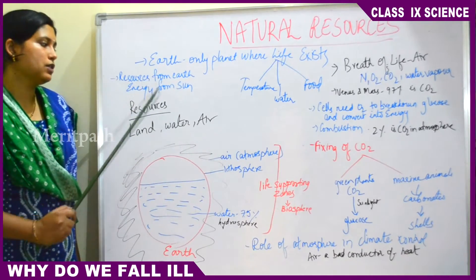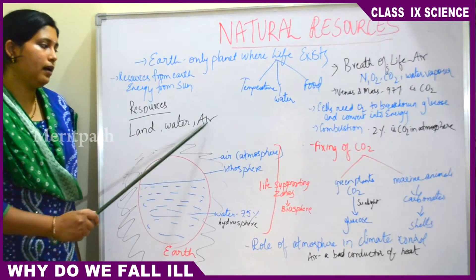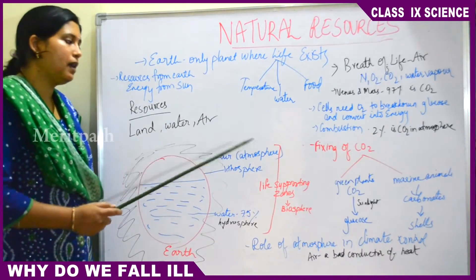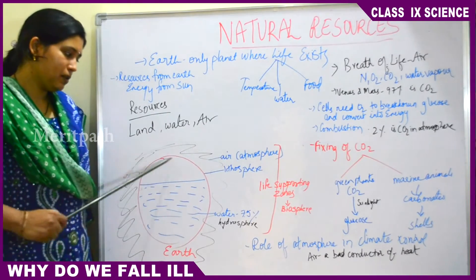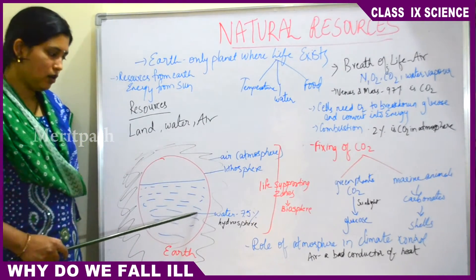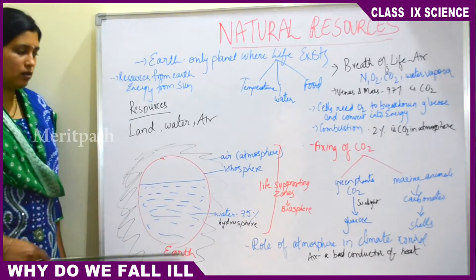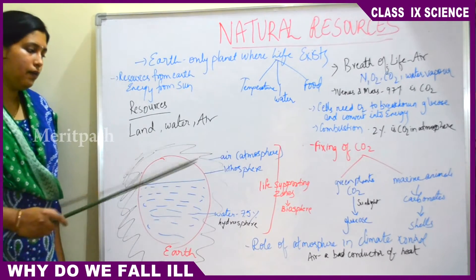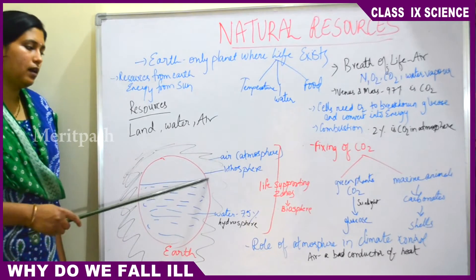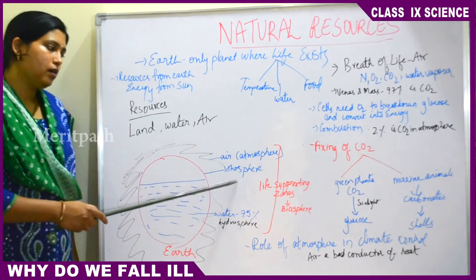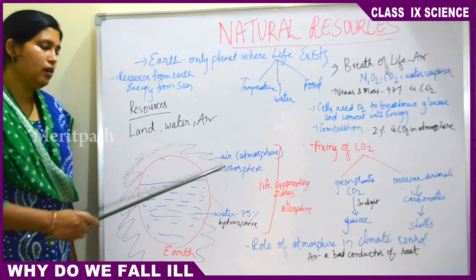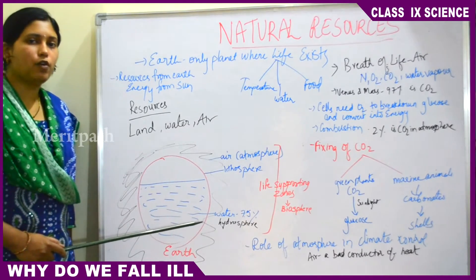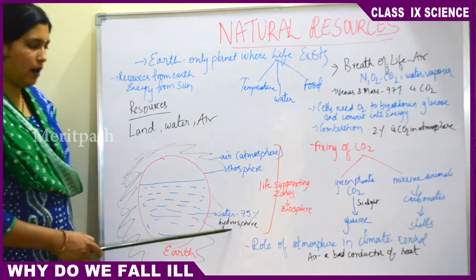The resources from the Earth are land, water, and air, and there should be a proper balance between these three. The Earth is surrounded by air, which is called the atmosphere. The outer crust of the Earth is called the lithosphere. Earth is constituted of 75% water, and this water zone is called the hydrosphere. Water is present both on the ground and underground, and can be in the form of drinking water, sea water, ice caps, or glaciers.